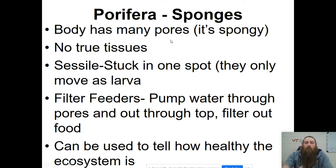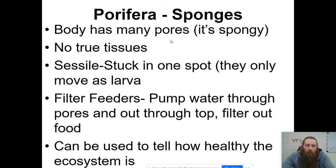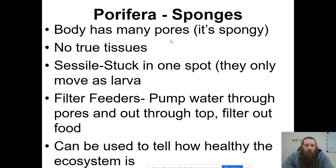The first one is the sponge — Porifera. The term Porifera comes from the fact that the body structure of a sponge has a lot of pores. It doesn't have any true tissues like human beings have. They are sessile for the majority of their life, which means they're stuck in one spot and not moving, but they do move in the larva stage of their life cycle.